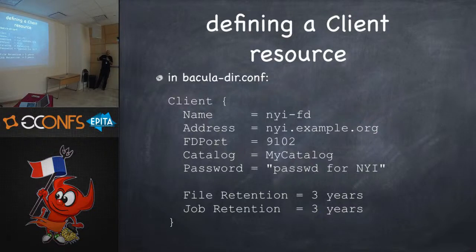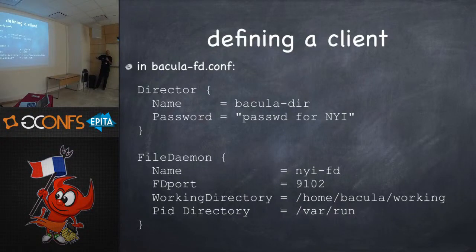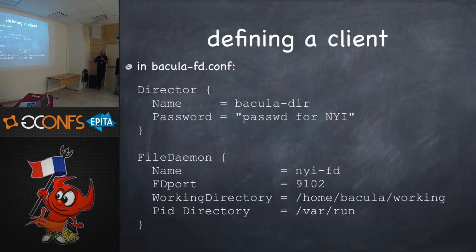A client resource includes a fully qualified domain name, the catalog you're going to use, and the password for this client. For this particular client, the director will contact it with this password supplying its own name — this is a shared secret which will also occur in the Bacula client configuration file. You can think of the Bacula FD as a server, but it's a client running on the client, which is a server, because you're backing up a server.